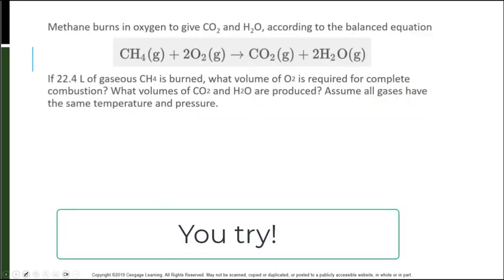Try to do this one. We know that methane can be combusted in this reaction, so we have oxygen, to create CO2 and H2O. If we start with 22.4 liters of methane, what volume of oxygen is required and what volume of our products will be produced? We are assuming that they are all gases and that all gases have the same temperature and pressure.